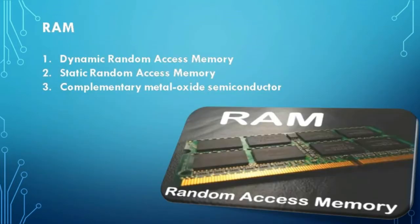RAM stands for random access memory. This is a temporary memory since the information stored in it is lost when the power is switched off. Hence it is called as volatile memory. There are three types of RAM namely DRAM (dynamic random access memory), SRAM (static random access memory), and CMOS (complementary metal oxide semiconductor).